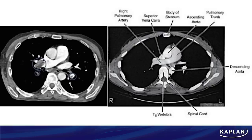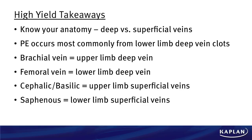That's what you see — not just one large dark circle but two other smaller dark circles as well. Big takeaways from this problem: know your anatomy — deep versus superficial veins. PEs occur most commonly from lower limb deep vein clots. The brachial vein is an upper limb deep vein to know. The femoral vein is the lower limb deep vein to know. The other answer choices — basilic, cephalic, saphenous — are all superficial veins. Knowing your anatomy helps you identify this complication and get the right answer on test day.